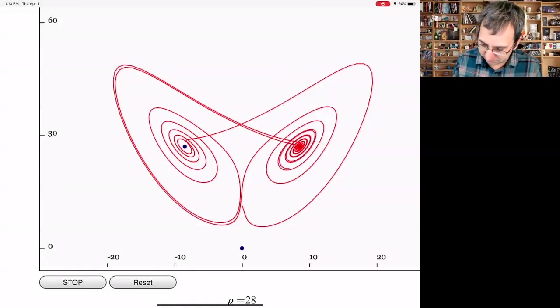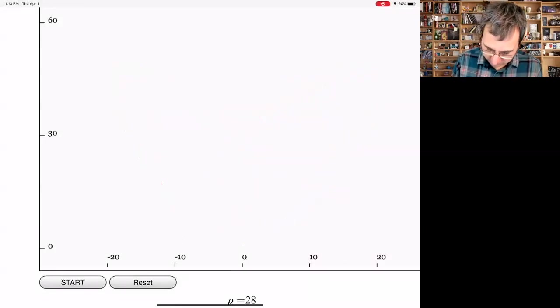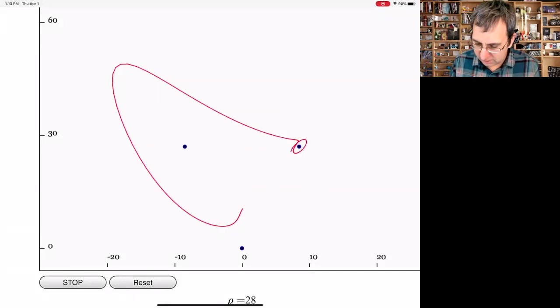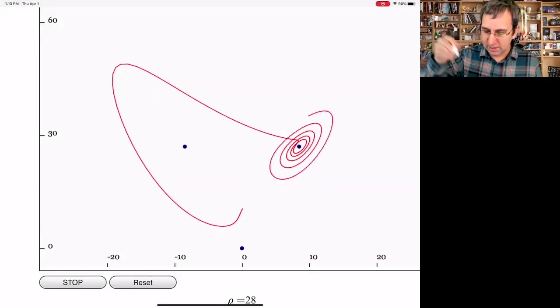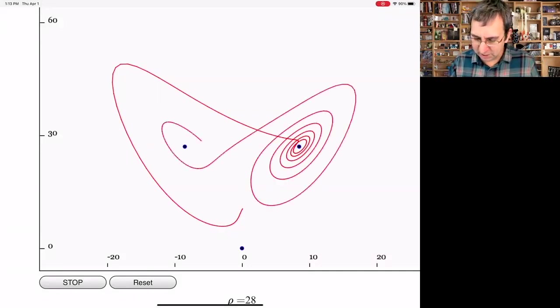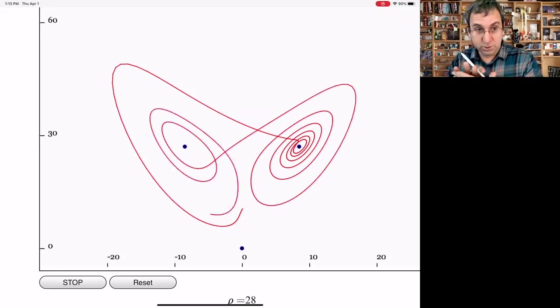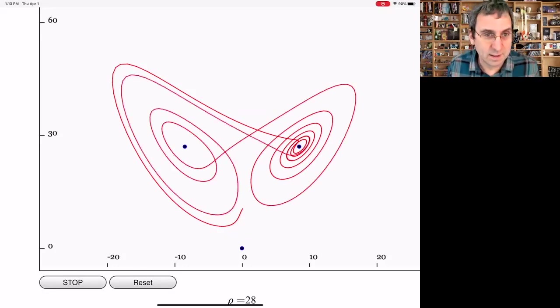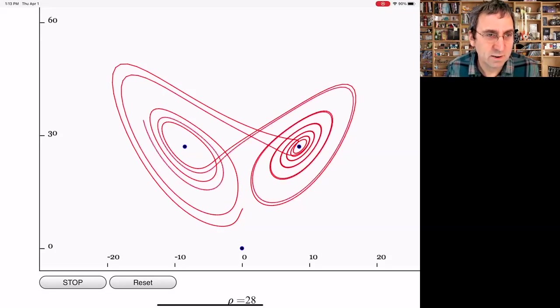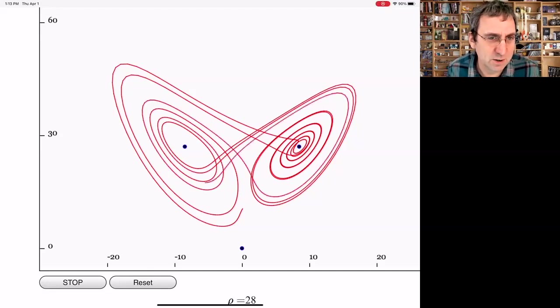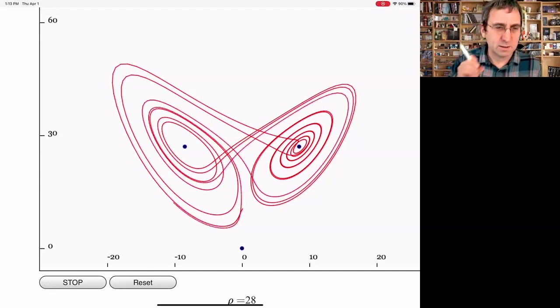One thing that Lorenz noticed, let me start this again. This is showing the XZ plane, so the XZ projection. And he noticed that if you looked at the peak of Z, that seemed to be a predictor of what the next peak of Z would be.